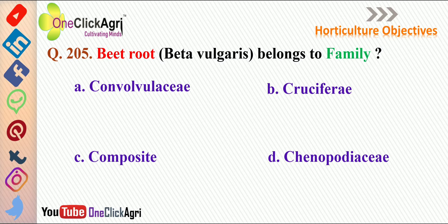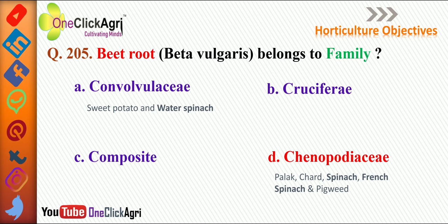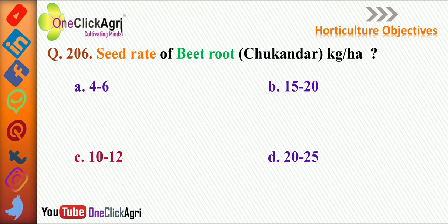Beetroot (Beta vulgaris) belongs to the family Chenopodiaceae. In this family also fall palak, chard, spinach, French spinach and pigweed. Sweet potato and water spinach fall under the Convolvulaceae family. The seed rate of beetroot (also called Chukandar) is 10 to 12 kg per hectare.